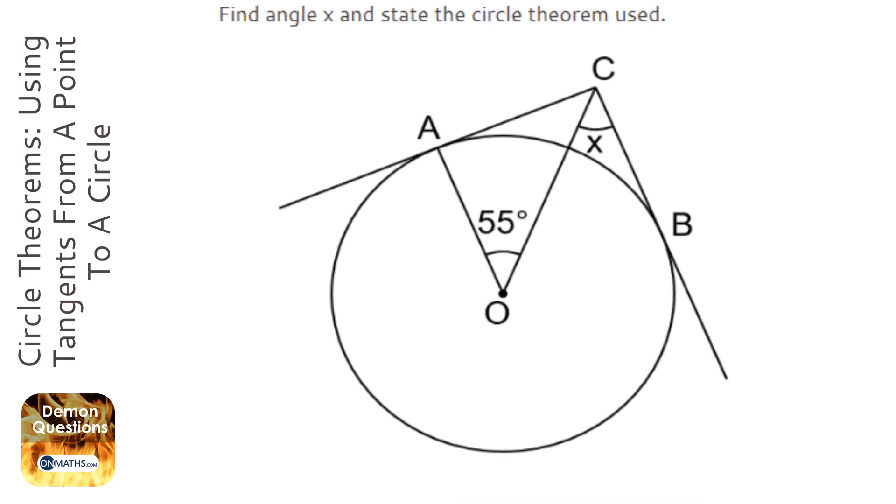For this question, a few things to identify quite quickly. This is going to be 90 degrees here because it's an angle between a radius and a tangent, and you need to write that down. I'm not going to, but you do need to write that down in your exam.